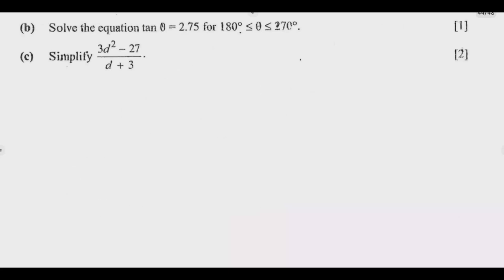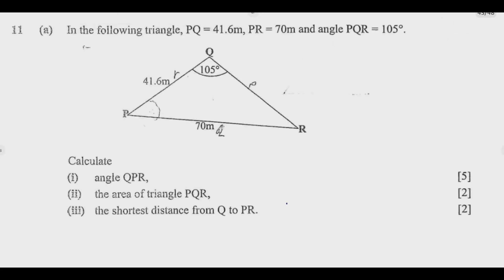That's 9 marks. Then we've got question B: solve the equation tan theta equals 2.75 for the interval theta lies between 180 degrees to 270 degrees. Then simplify that. So these are the questions. Let us start with question A which carries 9 marks, then we move to B and C.